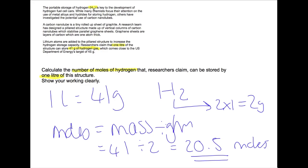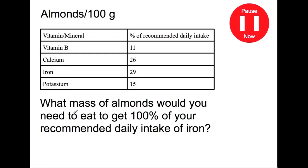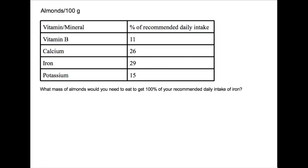Let's have a look at 2 other questions. Pause the video now and try and answer this question on almonds. So in this question we are given information about the vitamin and mineral content of almonds in 100 grams. And we are trying to find the mass of almonds that we need to eat to get 100% of your daily intake of iron. So we are looking at this line of the table and bearing in mind that this table is about 100 grams of almonds. So if you eat 100 grams of almonds you get 29% of your daily intake of iron.